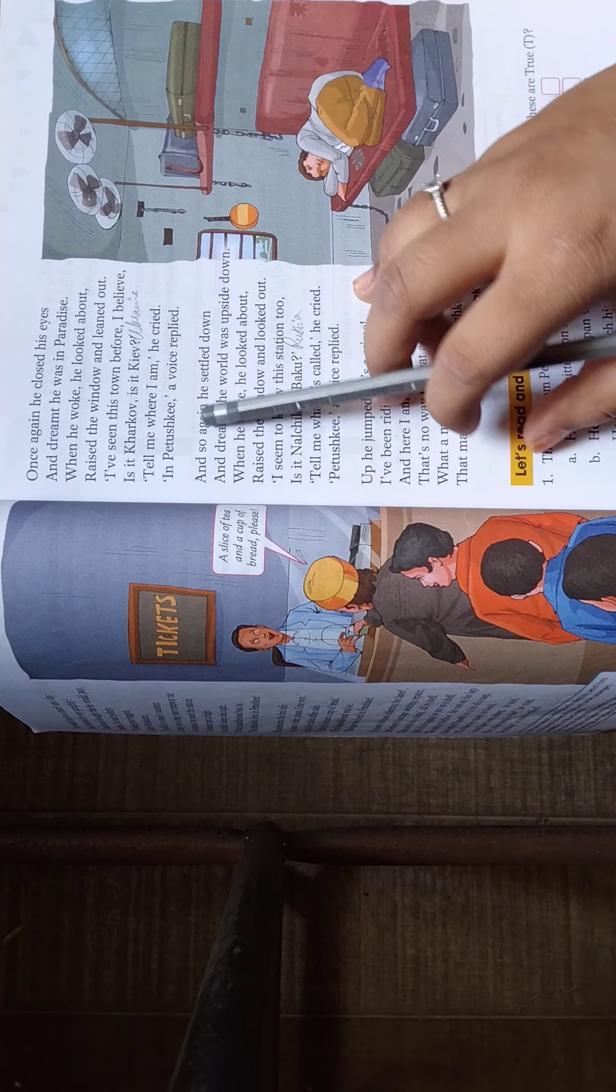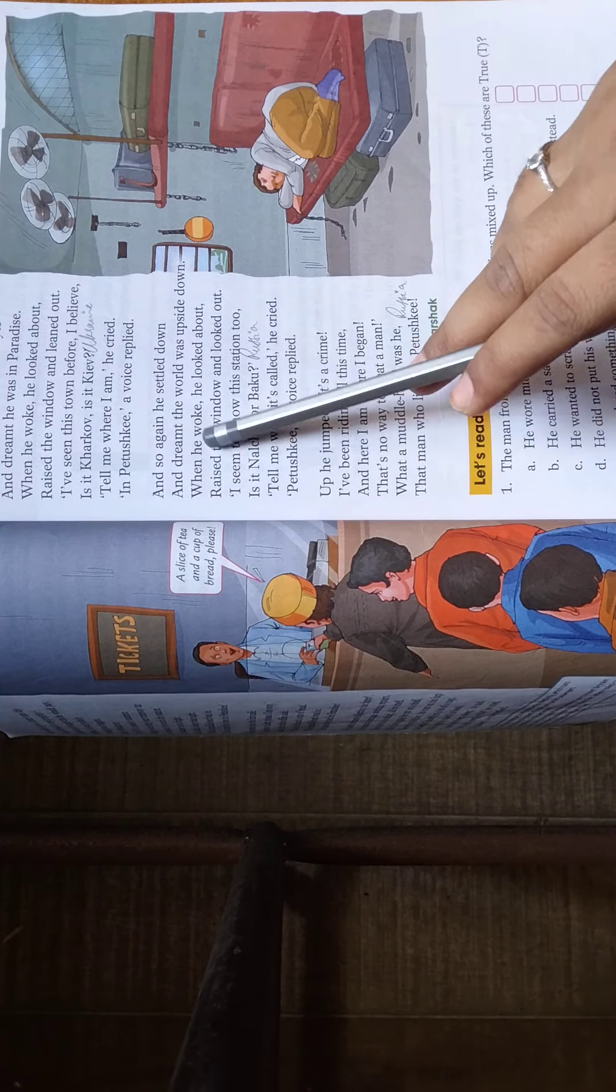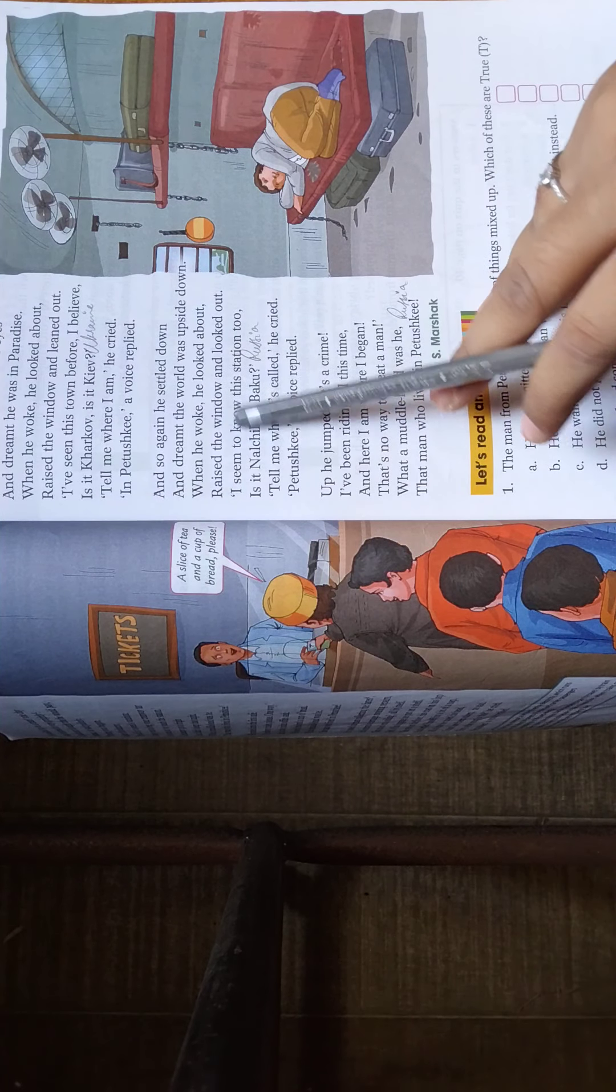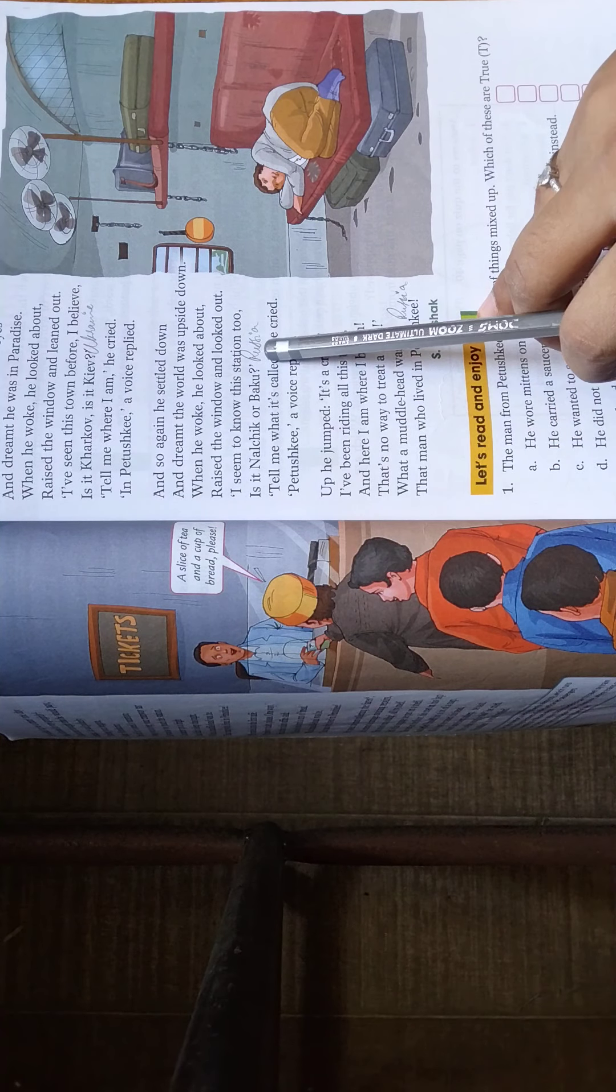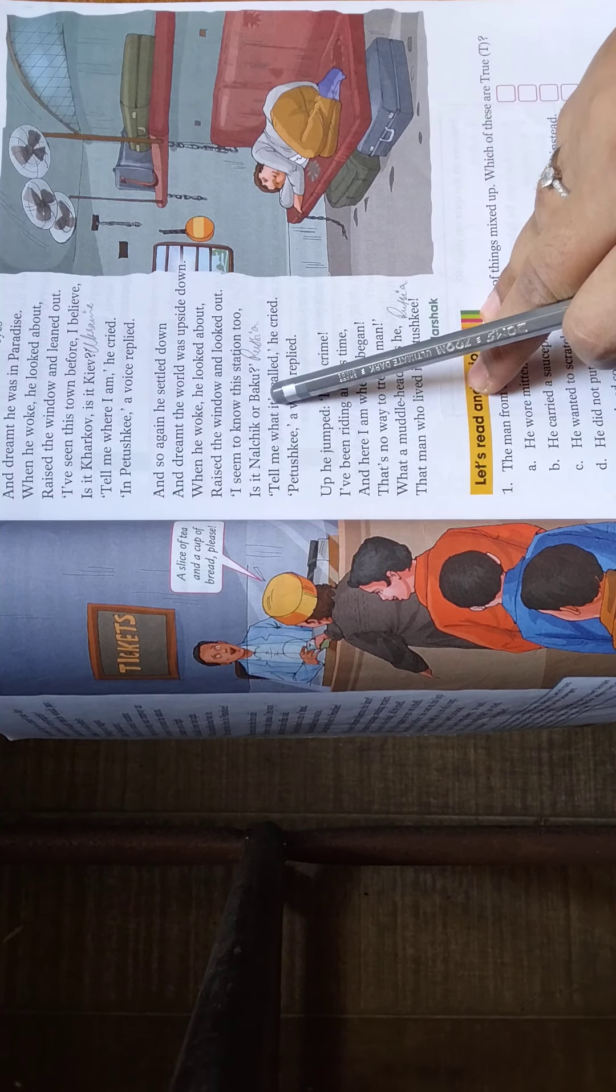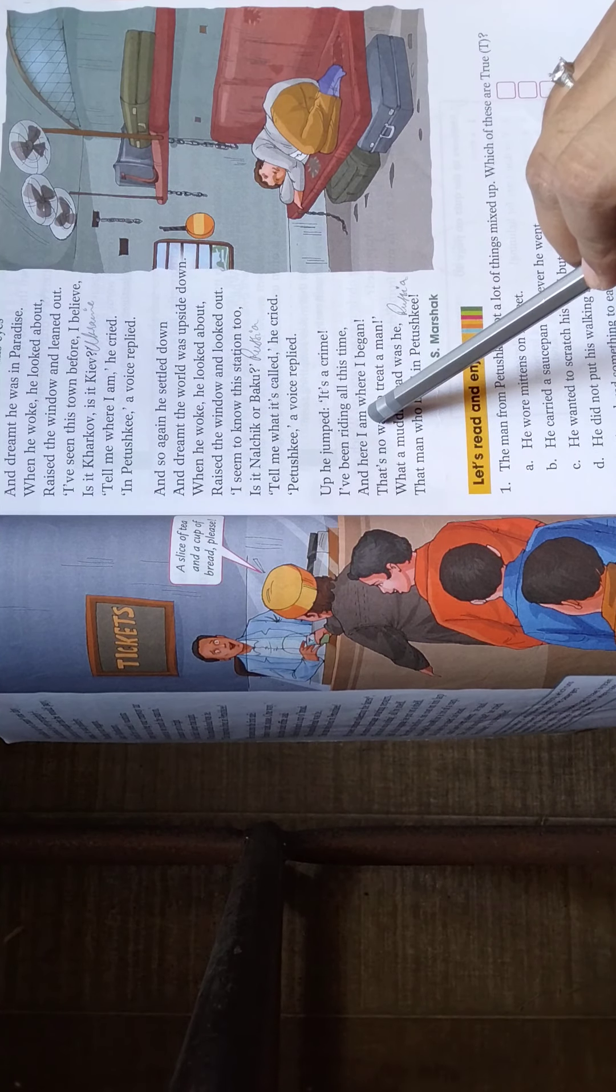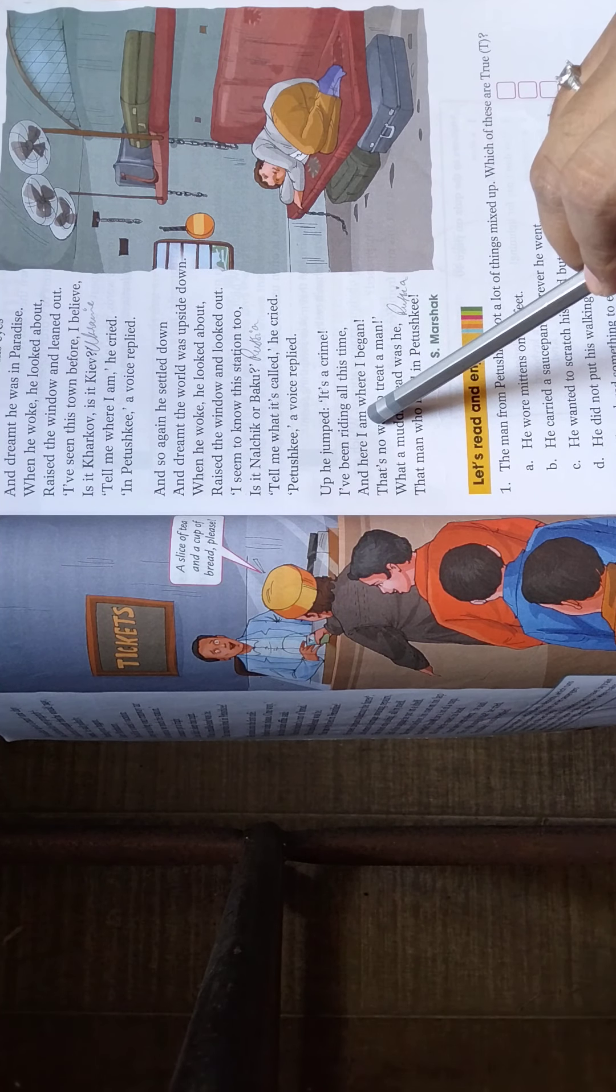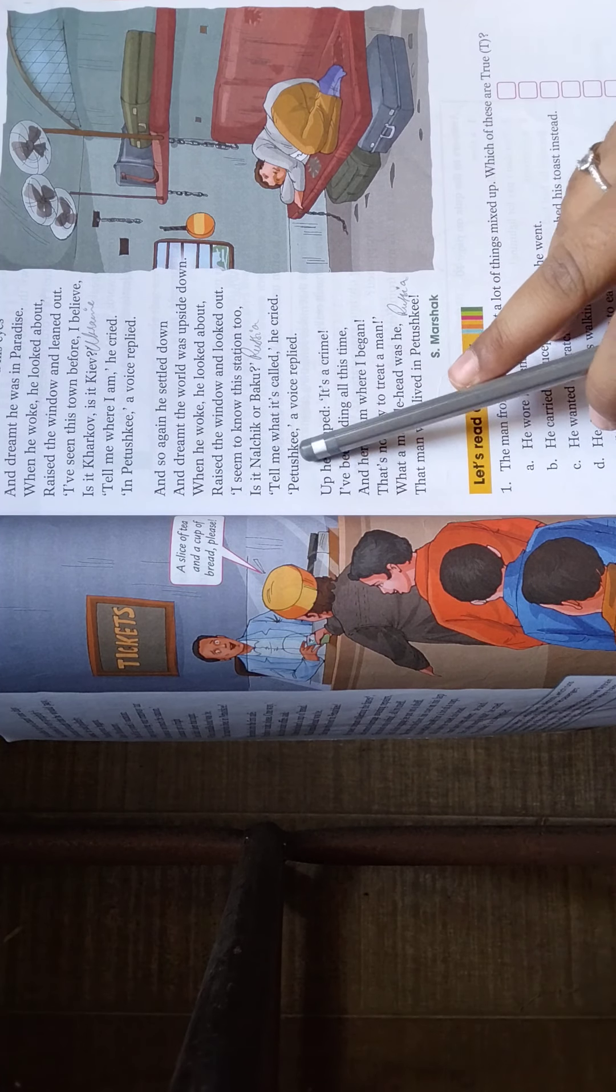The world was upside down. When he woke, he looked about, raised the window and looked out. I seem to know this station too. This is Nalchik or Baku. वो फिर वापस सो गया, वापस उठा, वापस उसने window open की और पूछता है, मैंने यह station पहले देखा है, यह station का नाम Nalchik है या Baku है.